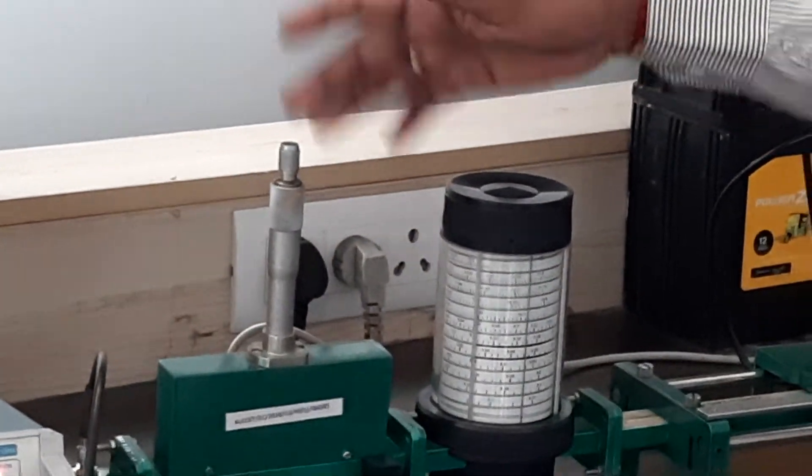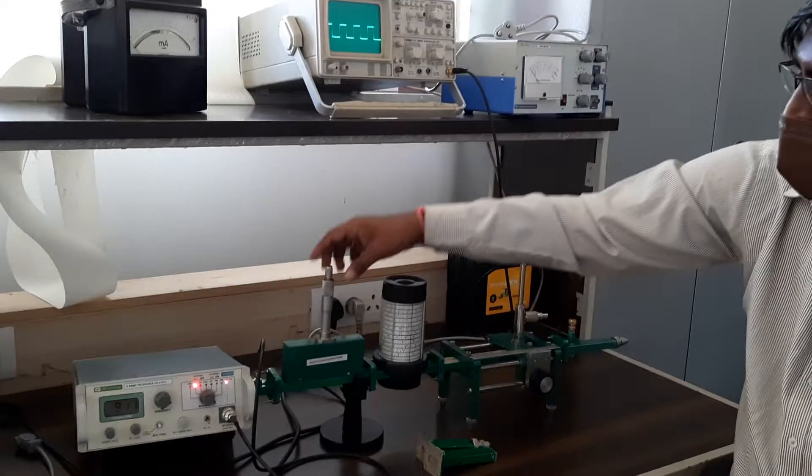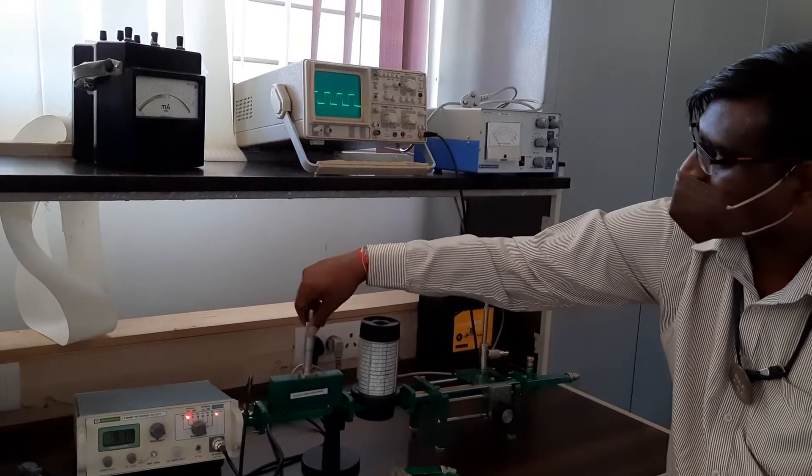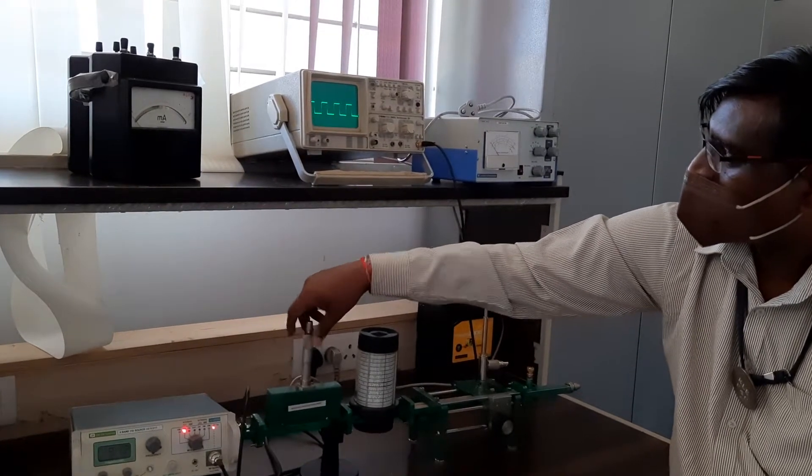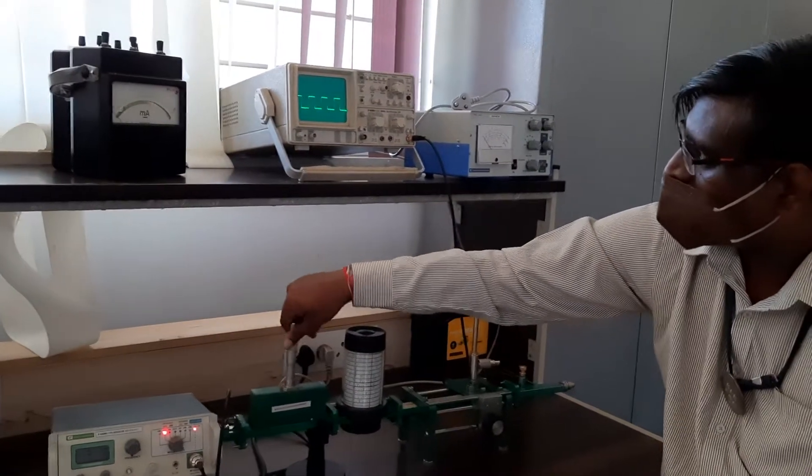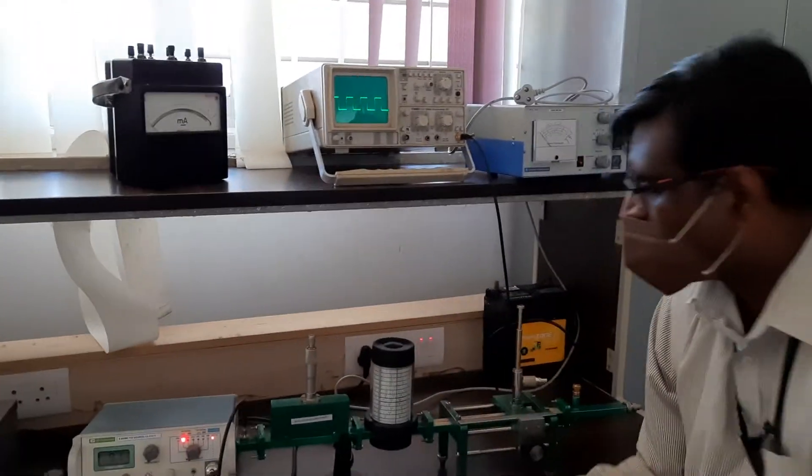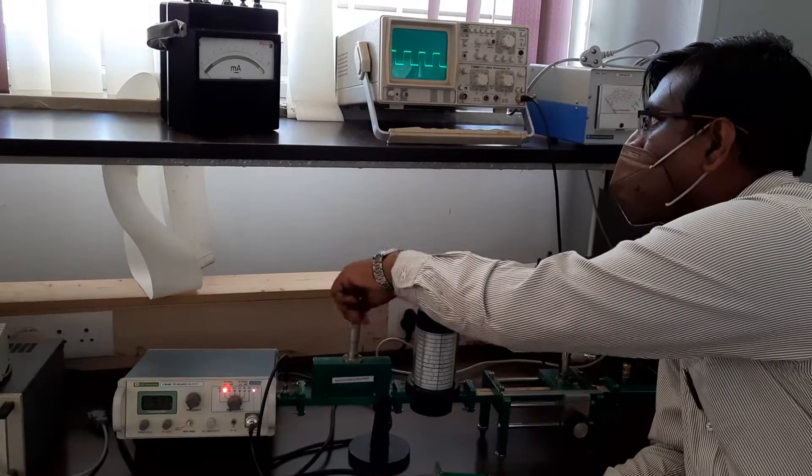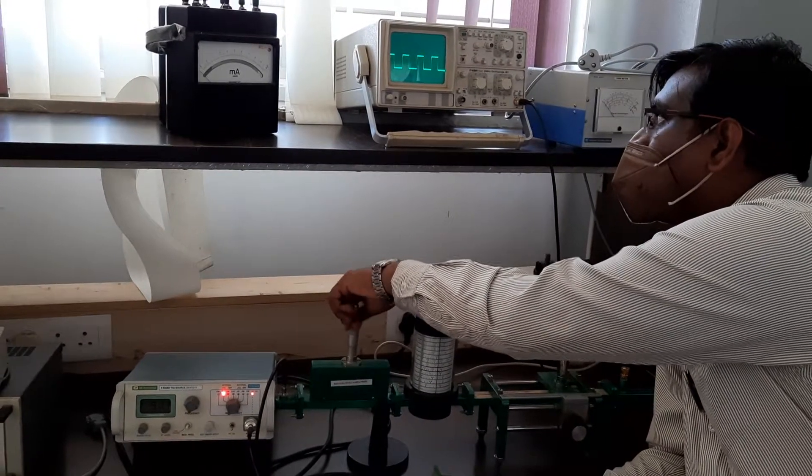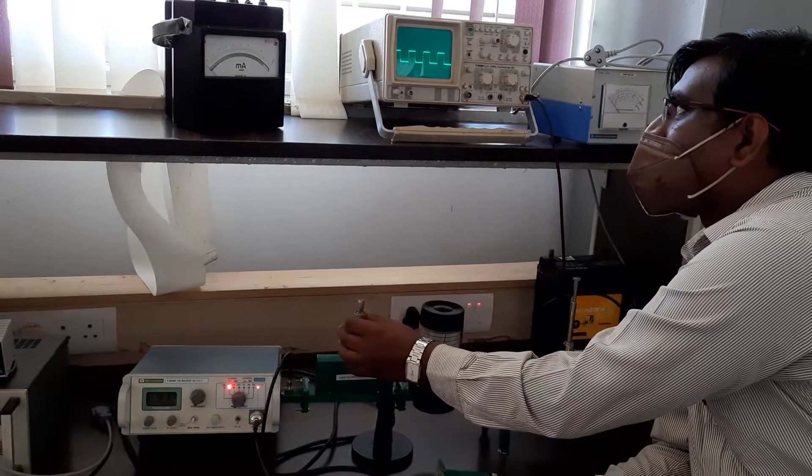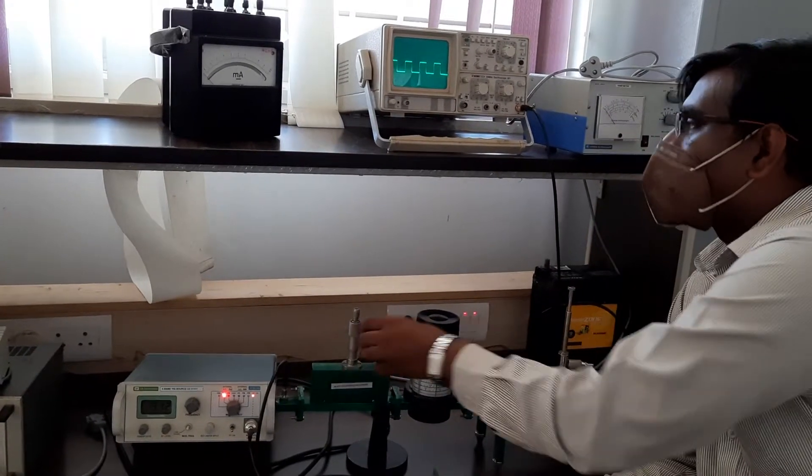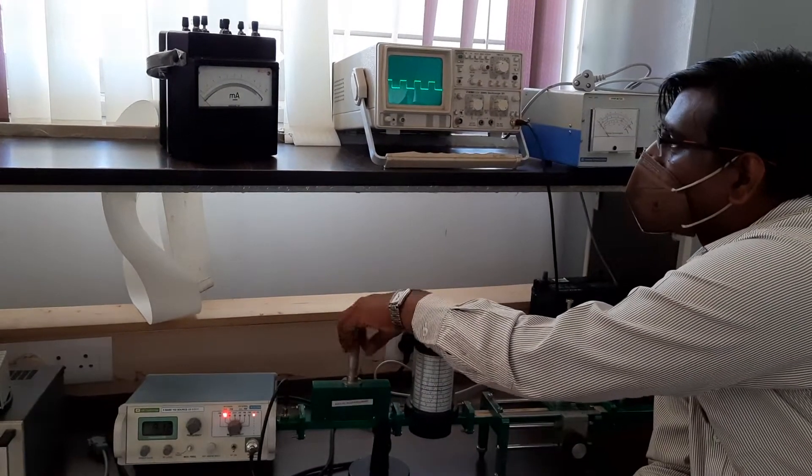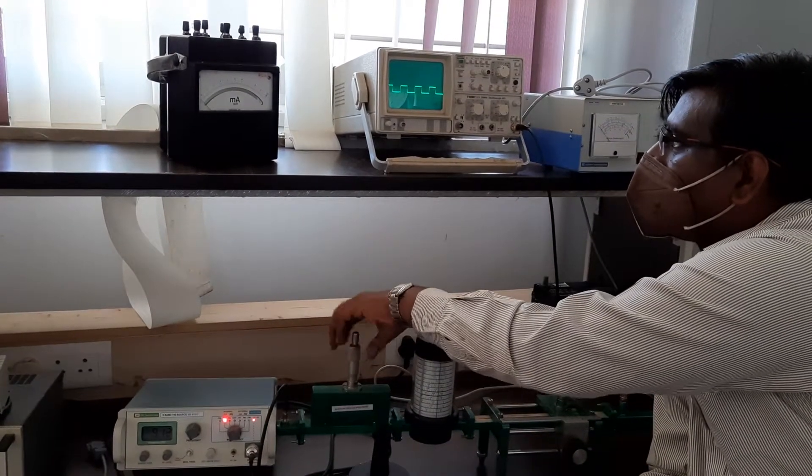What I will do is instead of noting down the reading, you can just check out if I keep on changing what happens to the overall output which is observed on the CRO. You can see that the amplitude output, the peak to peak amplitude, is getting reduced on the CRO.